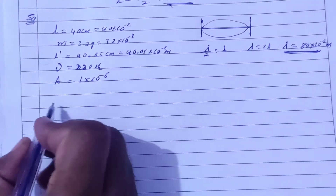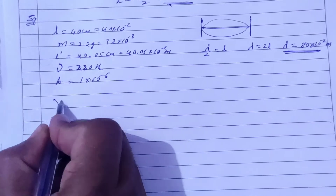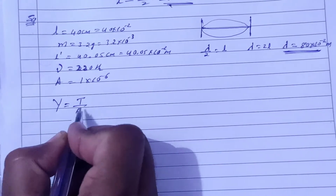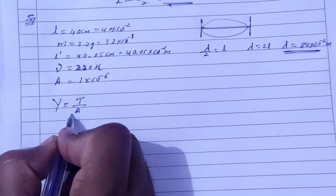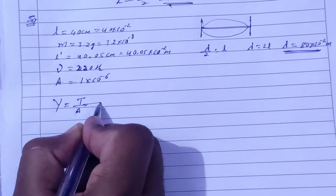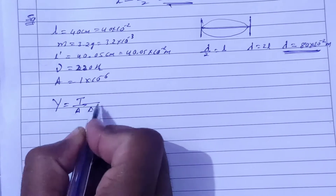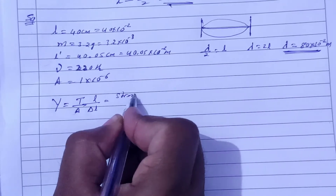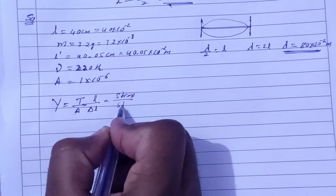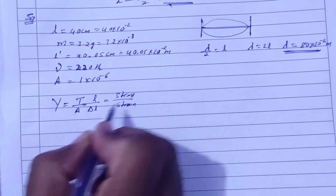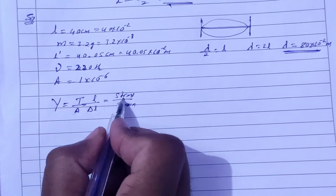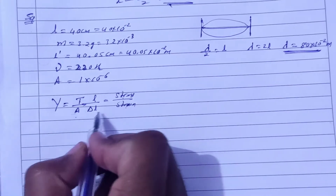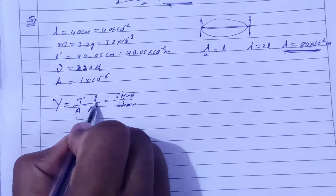We have to find Young's modulus. The formula for Young's modulus is stress upon strain. Stress is tension upon area (force upon area), and strain is delta L by L.